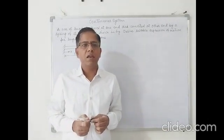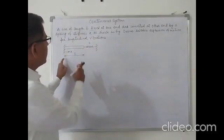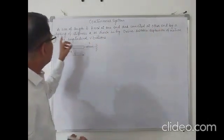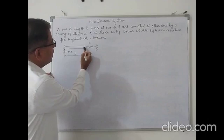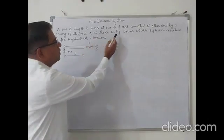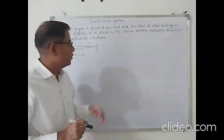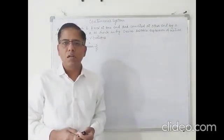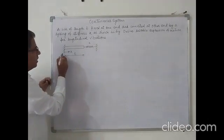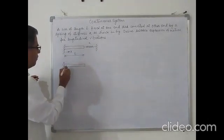We'll see how to derive the natural frequency equation in this particular case. A bar of length L is given, fixed at one end. At the other end it is connected by a spring of stiffness k. We need to derive the suitable expression of motion for longitudinal vibrations and find out the frequency equation for this particular case.